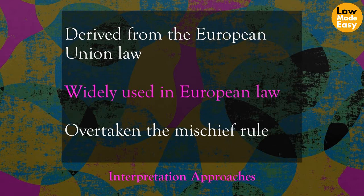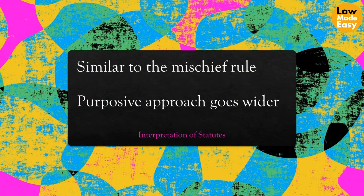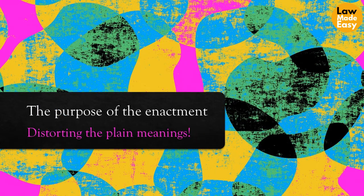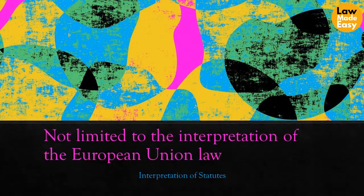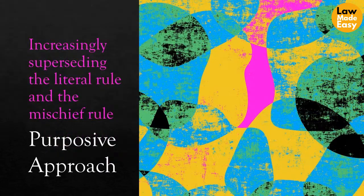It is sometimes similar to the mischief rule; however, the purposive approach goes wider than merely ascertaining and considering the mischief. According to this rule, the judges look at the purpose of the enactment for which it was passed, even if this means distorting the plain meanings of the words. That is something unique to European Union law and changed the landscape of the interpretation of statutes in the UK. In practice, this approach is not limited to the interpretation of EU law — judges take this approach in interpreting any piece of parliamentary enactment. It can be said that the purposive approach is increasingly superseding the literal rule and the mischief rule as the appropriate approach to ascertain the will of the legislature.